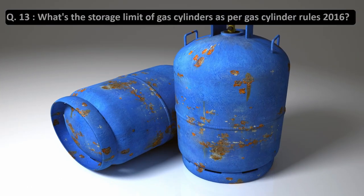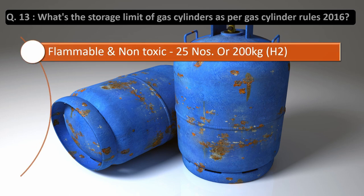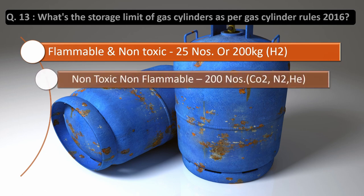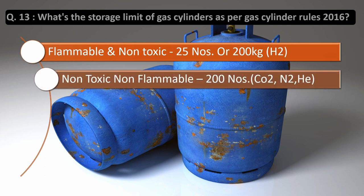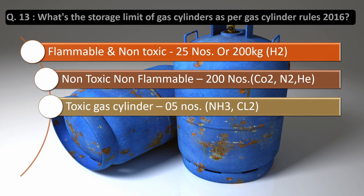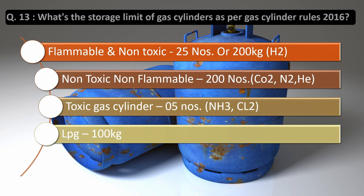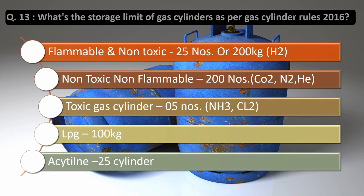Question number 13: What is the storage limit of gas cylinders as per Gas Cylinder Rules 2016? Cylinders that are flammable and non-toxic can be stored up to 25 in number or 200 kg — example: hydrogen. The second category, non-toxic and non-flammable cylinders, can be stored up to 200 in number — examples: carbon dioxide, nitrogen oxide, nitrogen, helium. The third type, toxic gas cylinders, can be stored up to 5 in number — examples: ammonia, chlorine. The fourth type, LPG cylinders, can be stored up to 100 kg. The fifth, acetylene cylinders, can be stored up to 25 in number without any license. For storage beyond these limits, a license is required.